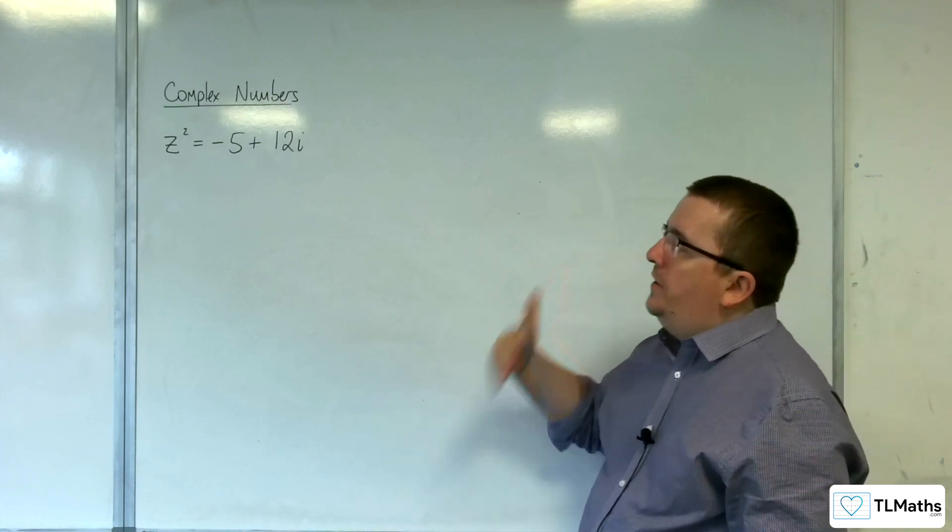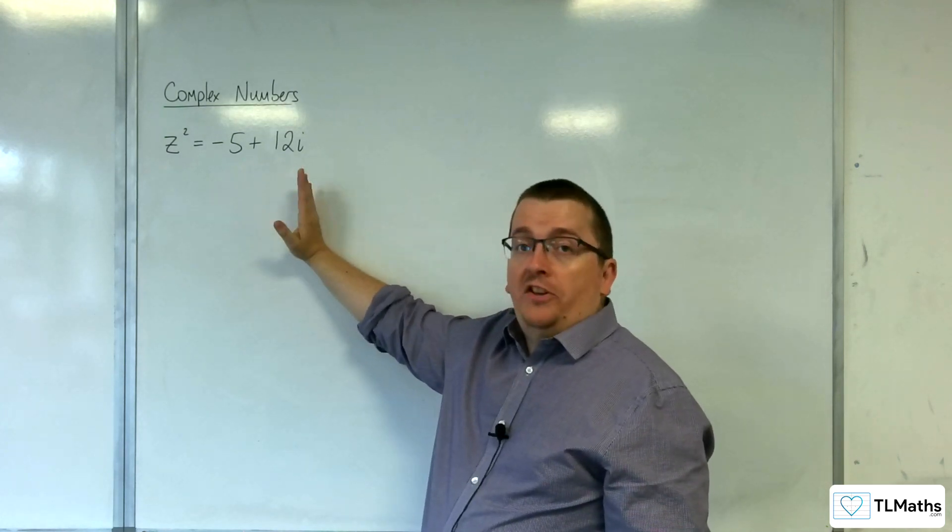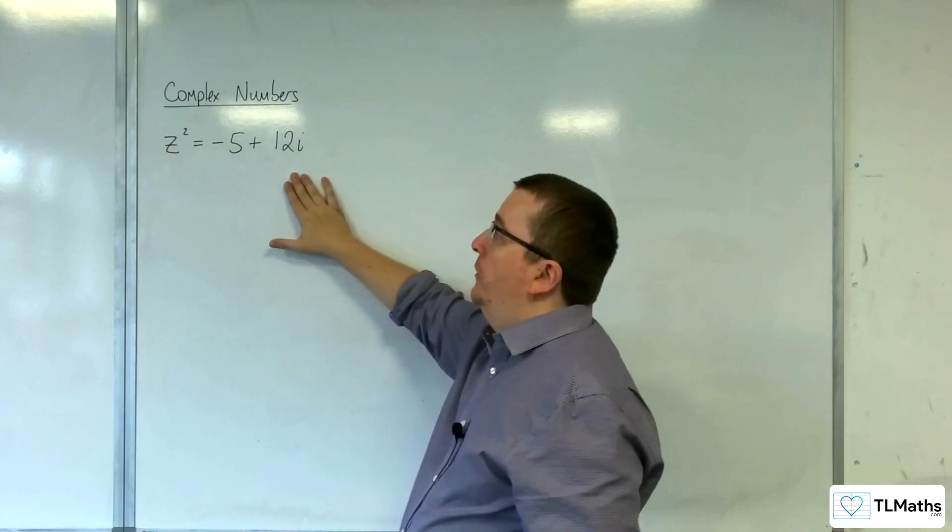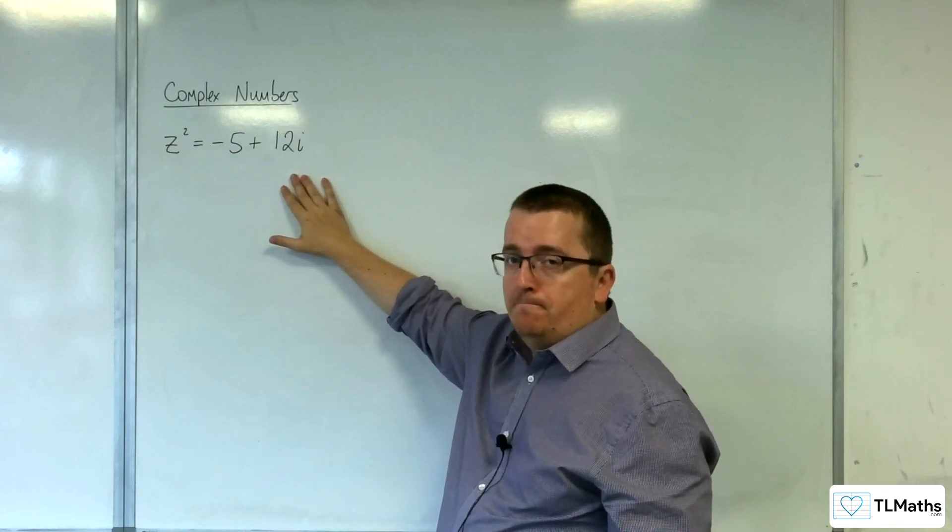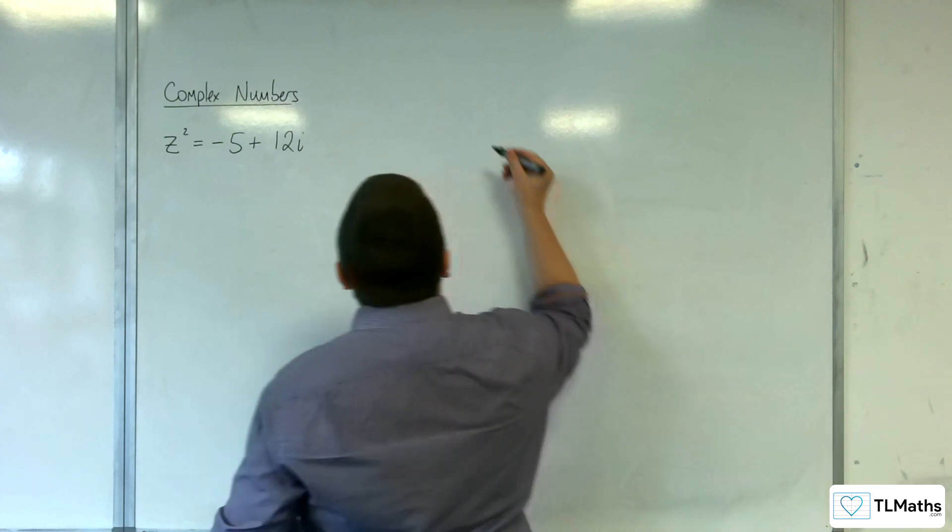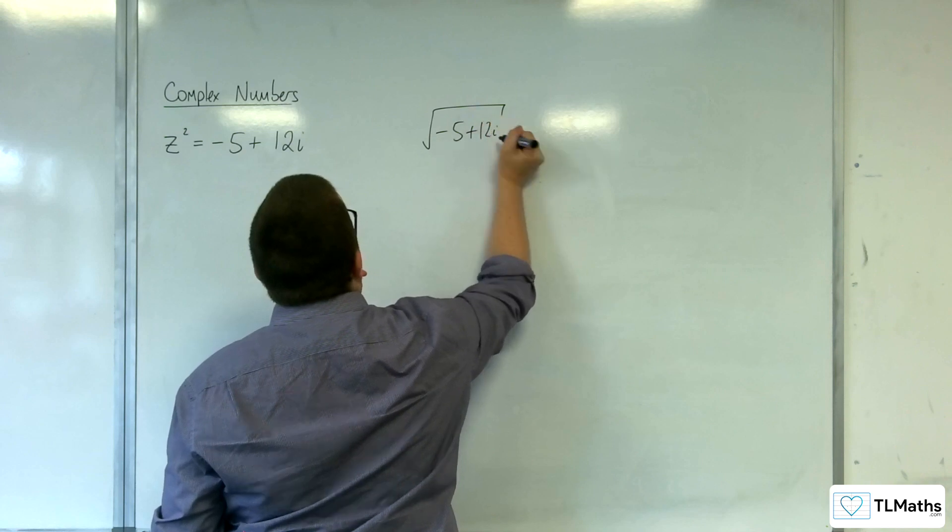Now, effectively, finding the square root of -5+12i is precisely the same as solving the equation z² = -5+12i. Because, effectively, you're saying I want to find the square root of -5+12i.